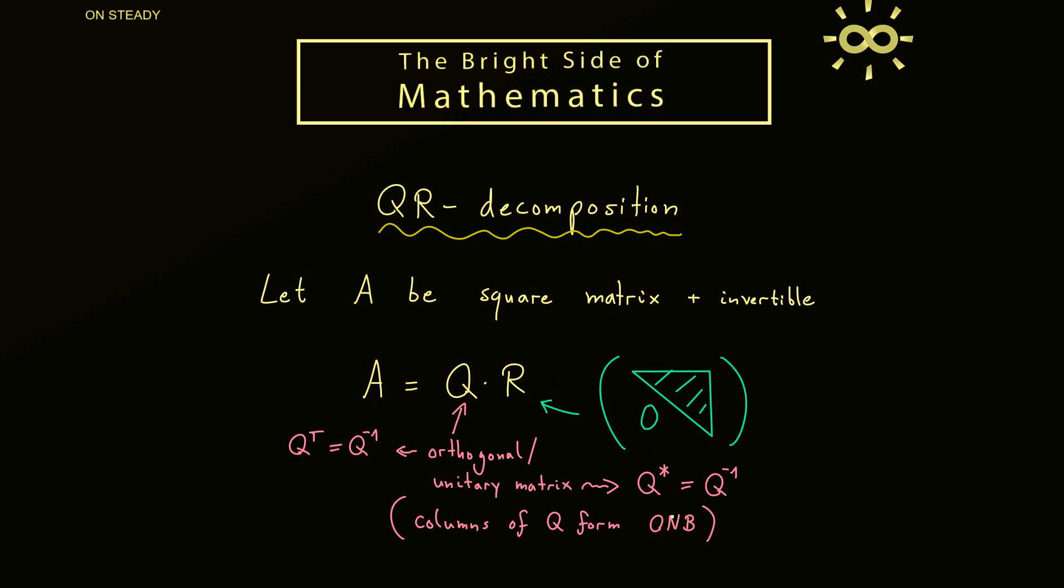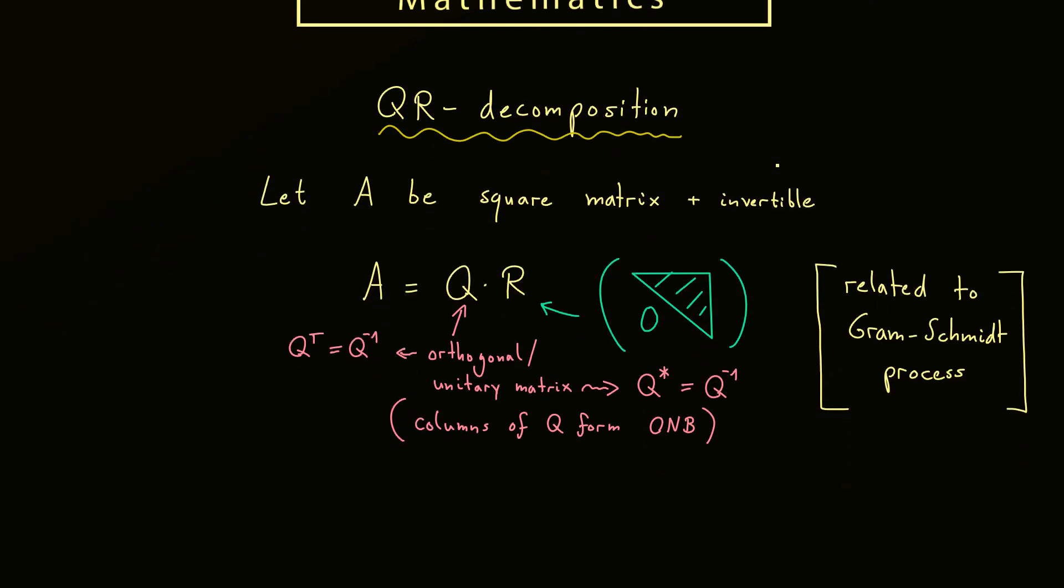So now please recall an orthonormal basis, or in short an ONB, is a basis where each element has length 1 and two different elements are orthogonal. Hence, it shouldn't surprise you that the whole QR decomposition is related to another thing, which is called the Gram-Schmidt process. In fact, I would say they are completely the same thing.